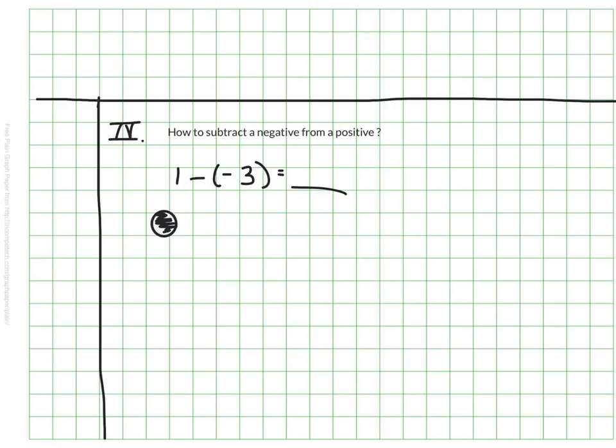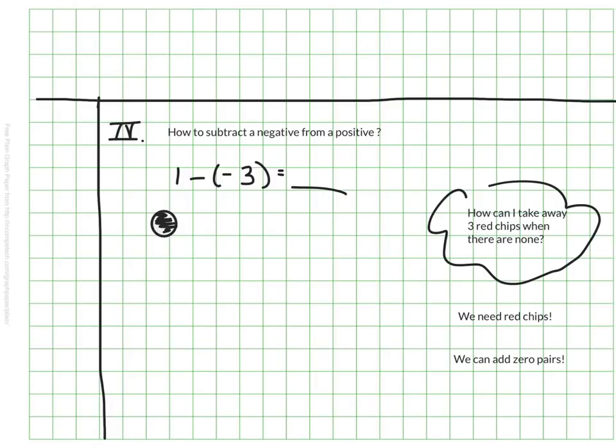And of course, the next step would be that I would want to take away three negatives. So once again, I find myself asking, how can I take away three red chips when there are none? Somehow we need red chips, but I can't just throw red chips on here. That'll change the value of what I'm looking at. So I need to make sure I'm adding zero, which means once again, I'm going to add some zero pairs until I have enough red chips to remove what I need to take off. In this case, three red chips.